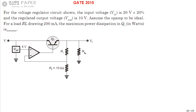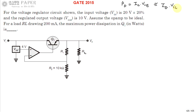The power dissipation of a transistor is generally calculated as Ic into Vce — collector current into collector-to-emitter voltage. This is the power dissipation across the transistor, and it is approximately equal to Ie into Vce.